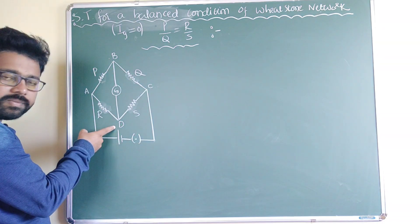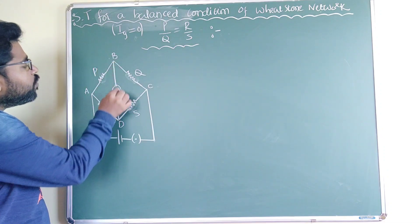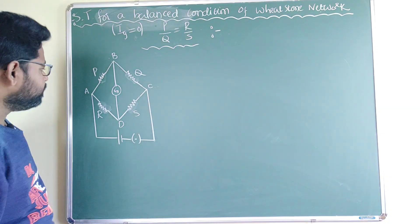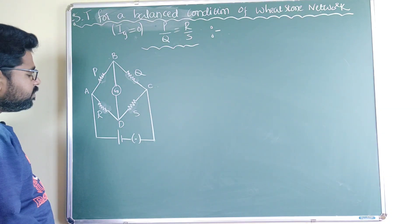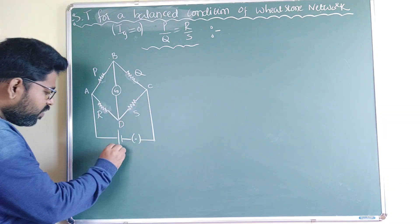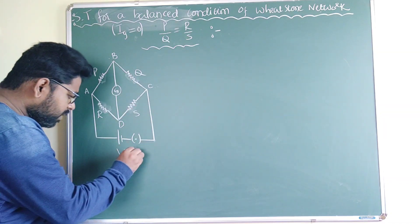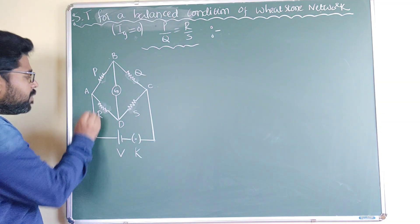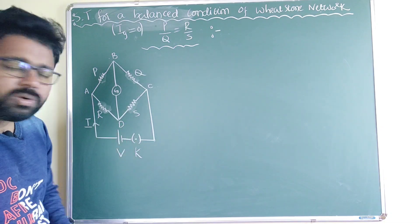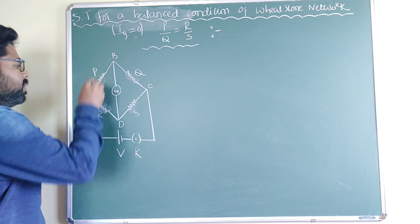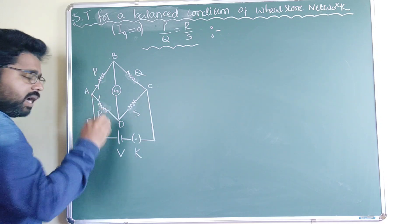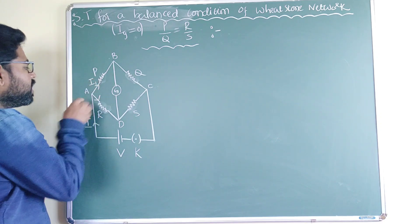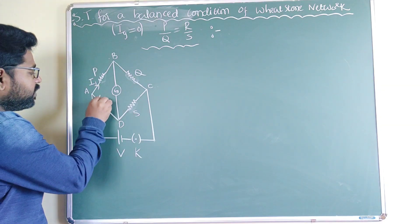This is the diagonal arm, and along this diagonal the galvanometer is connected, whose resistance is capital G. This is connected to a battery of EMF V volts with a key K. From this, the main current I comes in, arrives at point A, and splits into two parts — one part in the AB arm, the other part in the AD arm.